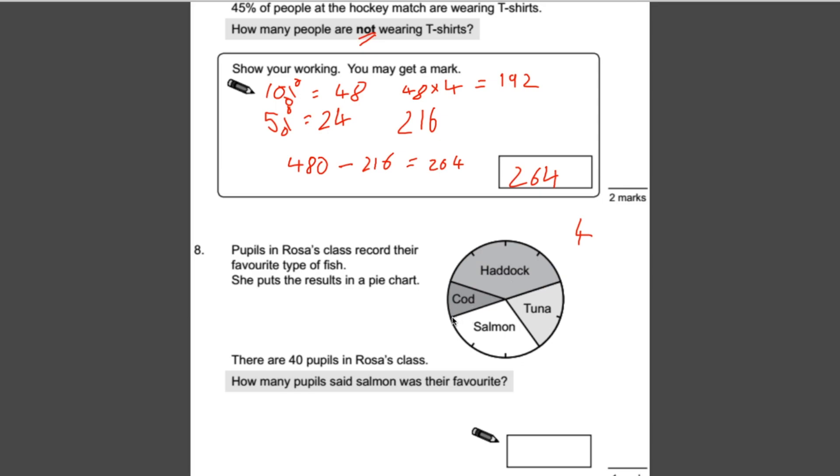So having a look, we know that 4 people liked cod. If we count up in fours, it's 4, 8, 12, so 16 people like haddock. 4, 8, so 8 people like tuna. 4, 8, 12 people like salmon. So how many people said salmon was their favorite? 4, 8, 12—the answer is 12.